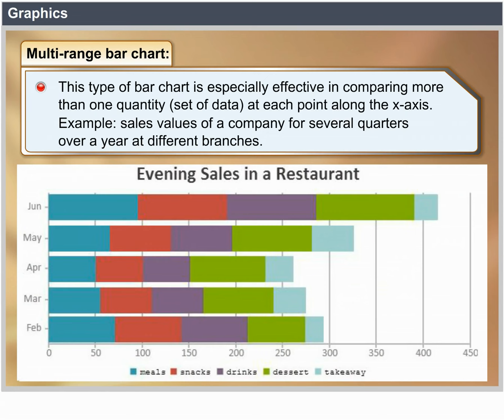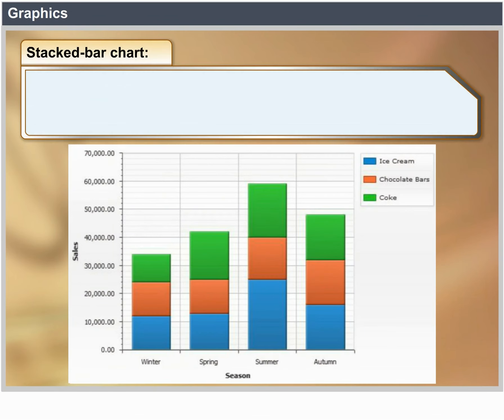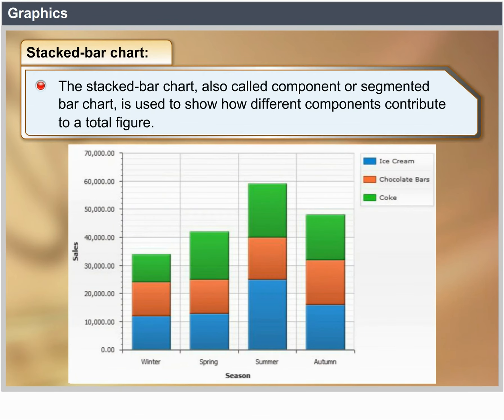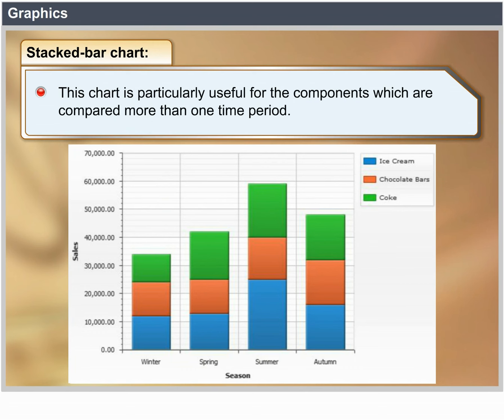Bar charts display a quantity set of data at each point along the x-axis. For example, sales values of a company for several quarters over a year at different branches. The Stacked Bar Chart, also called a Component or Segmented Bar Chart, is used to show how different components contribute to a total figure. This chart is particularly useful when components for more than one time period are being compared.